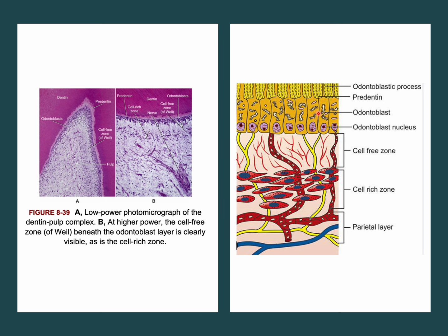We have now discussed the blood supply to the dental pulp, the nerve supply, and how both form plexuses under the odontoblastic layer. We have also discussed the lymphatic supply to the dental pulp. In the next part, we are going to discuss the different regions seen under the microscope for the dental pulp, as the dental pulp is not homogeneous at its peripheries. See you in the next part.